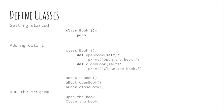Methods are equally as easy to add to a class. Methods begin with a def statement and always have at least one parameter, and that is self. It appears in the first position of the parameter list, followed by the colon and one or more indented statements.